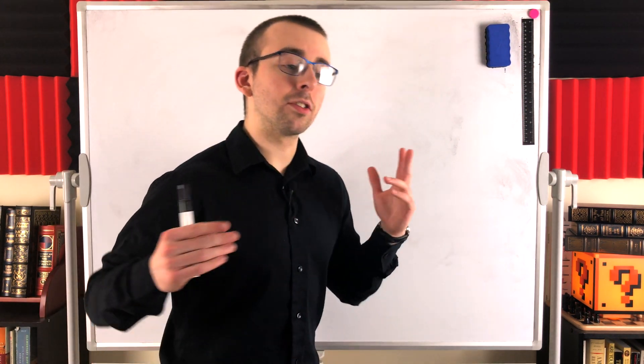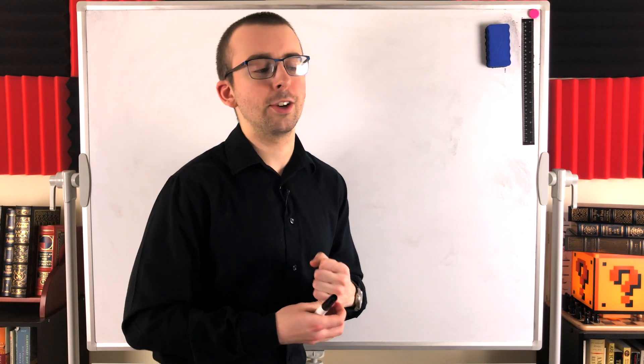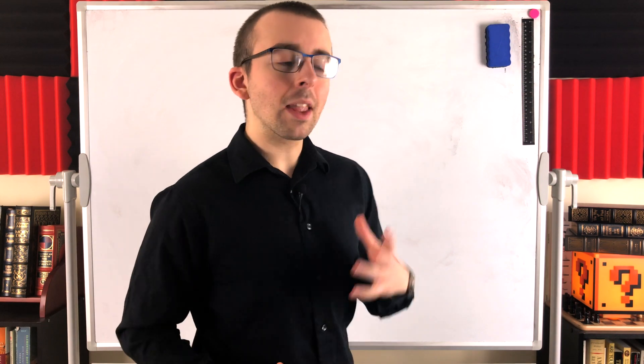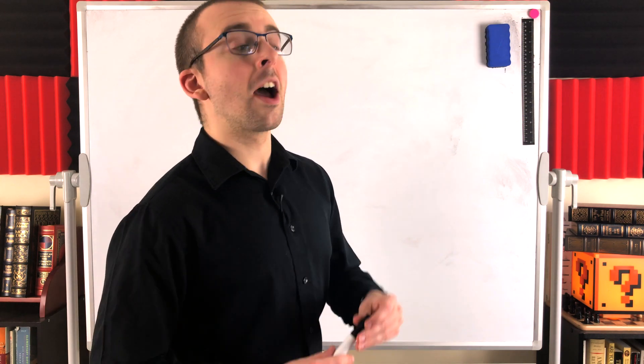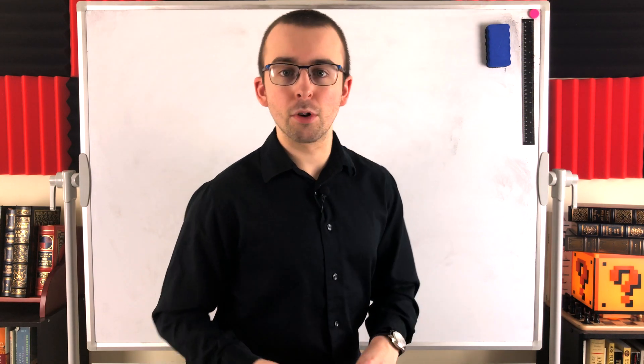Before we get into the details, let me just super quickly answer the question. Given a graph G, a proper subgraph of G is a subgraph of G that isn't equal to G. Otherwise, we call it an improper subgraph.